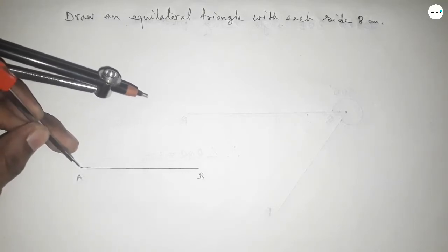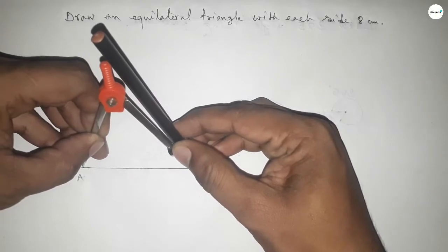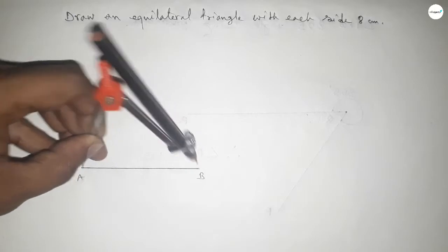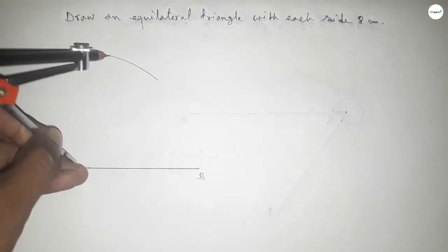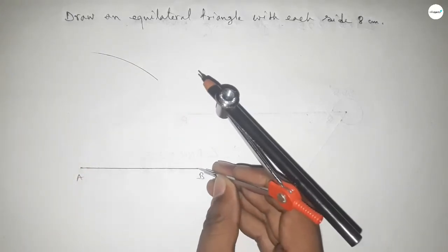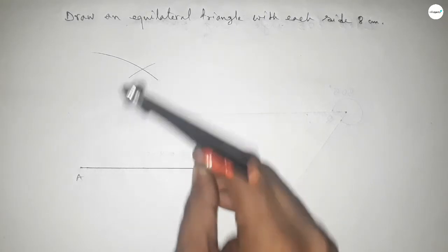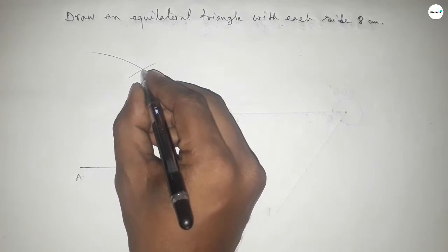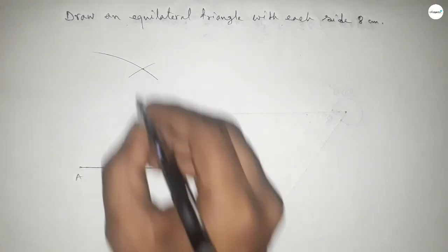Now taking the length AB by compass by this way and drawing an arc here. With same length, putting the compass here and cut here. So both the curves intersect at a point and this is C point.